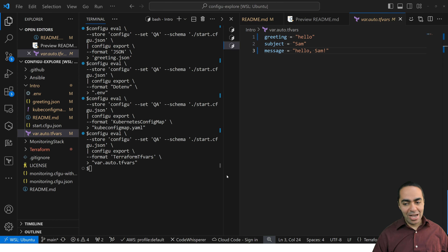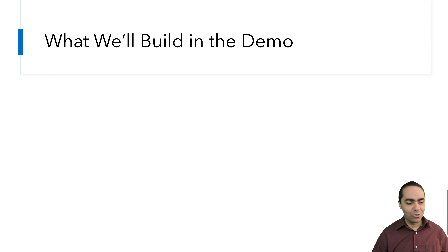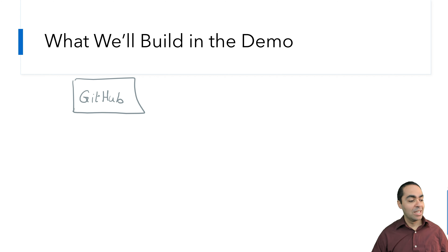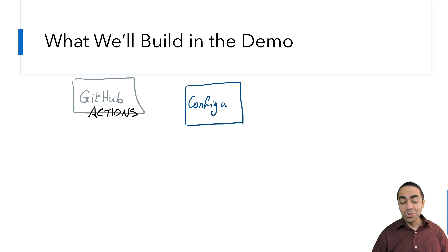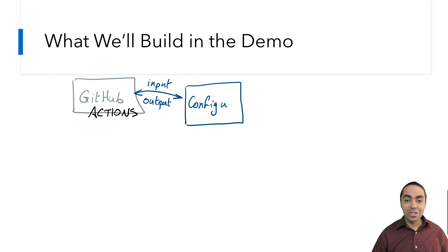That was a short intro into ConfigU, but you have many questions about how you can use ConfigU in your own applications. Let's take a look at what we're going to build for our real world scenario. We have GitHub as our version control system, GitHub Actions for our CI/CD pipeline, ConfigU as our configuration store, and we'll interact between GitHub Actions and ConfigU inputting and outputting values.